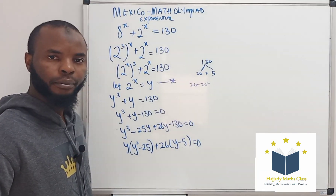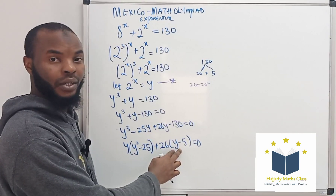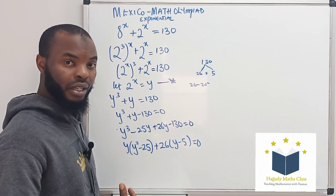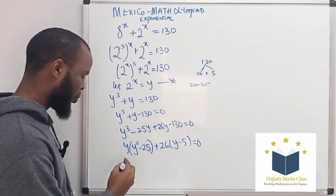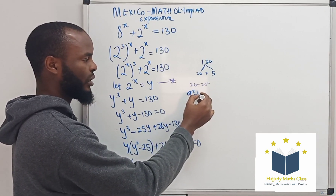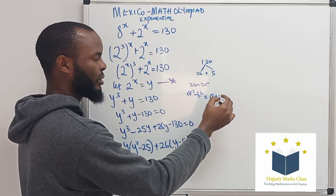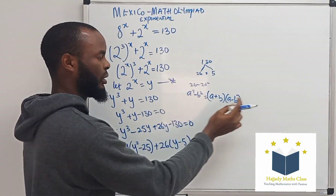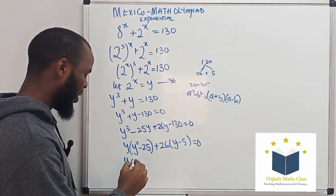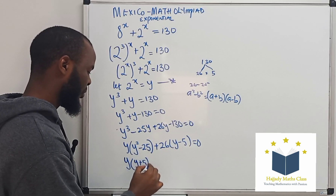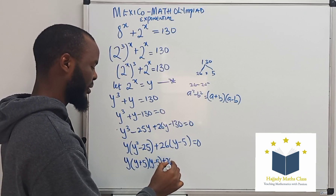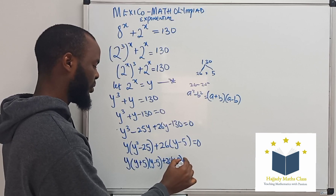Now, looking at this, you can see that y minus 25 is not the same thing as y minus 5. But using the basic principle we've used in our previous videos — difference of two squares. Using the principles of difference of two squares, and the rule that says a squared minus b squared equals a plus b times a minus b, I'm going to apply that here. So here I'm going to have y plus 5, y minus 5, plus 26, y minus 5 equals 0.